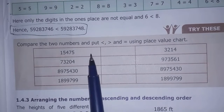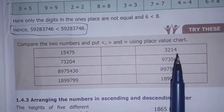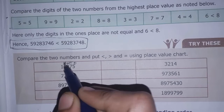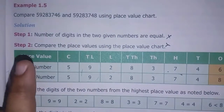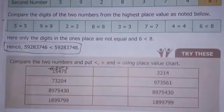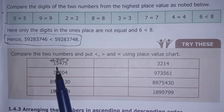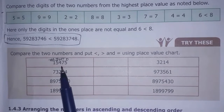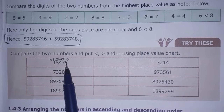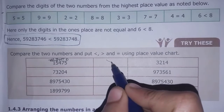Now let's compare two numbers using the place value chart. We compare the digits place by place. If the first compared digits give two versus three, the number is less than. If we compare and the number is bigger, the sign is greater than.